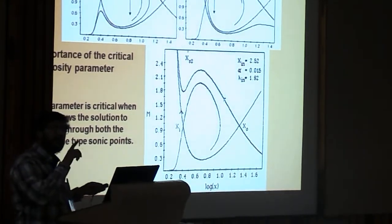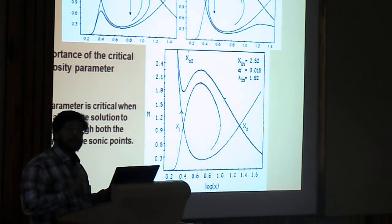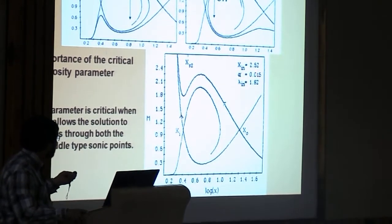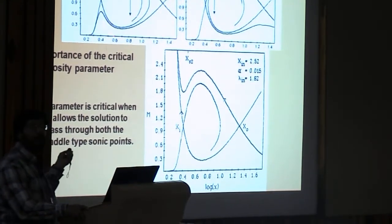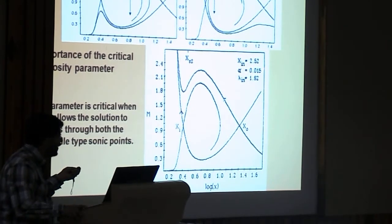This is really, in my opinion, the best thing that happened to the accretion process, after Shakura-Sunyaev. The reason is, you know now, that if the viscosity is less than this critical disk, there will be a shock solution, and everything that I talked about. If the viscosity is larger than this critical value, then you have typical Shakura-Sunyaev disk.